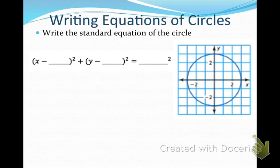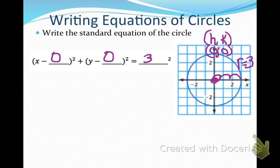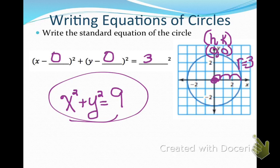Write the standard equation of the circle shown on the graph. First, identify h and k — the center — which in this case is the origin, (0, 0). Then count to find the radius, which is 3. Plugging into the standard equation and simplifying: x minus 0 is just x, and y minus 0 is just y. So the equation is x squared plus y squared equals 9. That is the equation of the circle centered at the origin.